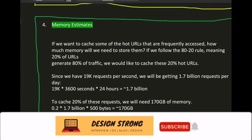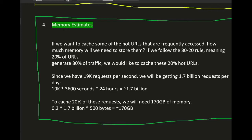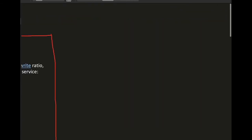For memory estimation, we follow the 80-20 rule — 20% of URLs will generate 80% of traffic because some URLs will be more popular. We want to cache these 20% of URLs to address the low-latency requirement. With approximately 19,000 requests per second and 1.7 billion requests per day, caching 20% means storing 20% of 1.7 billion × 500 bytes, which is approximately 170 GB of cache.